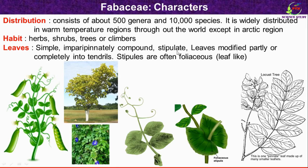Leaves are stipulate, meaning stipules are present. Leaves are modified partly or completely into tendrils. As you can see here, this is the leaf of Pisum sativum or garden pea, where the leaflets are completely modified into tendrils. This tendril is produced by replacing a leaflet. The stipules produced are often foliaceous, meaning leaf-like. Here the stipule is present but it looks like a leaf.